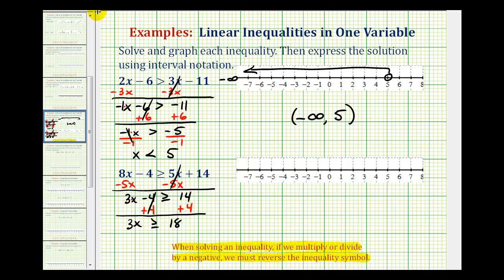And the last step is to divide both sides by 3. Now we're dividing by a positive 3, so we do not reverse the inequality symbol. So we have x, greater than or equal to 18 divided by 3, is equal to positive 6.